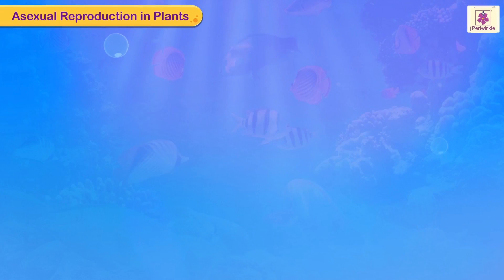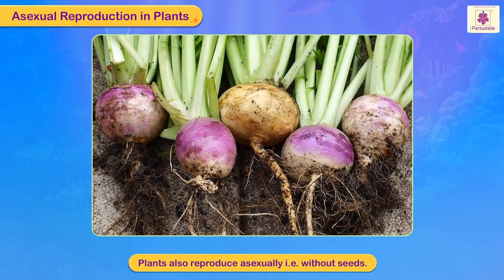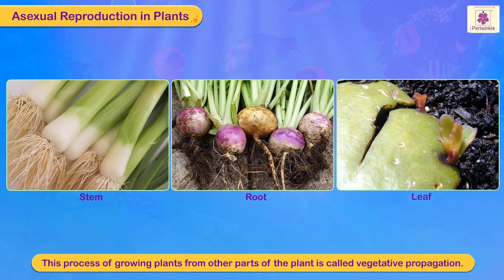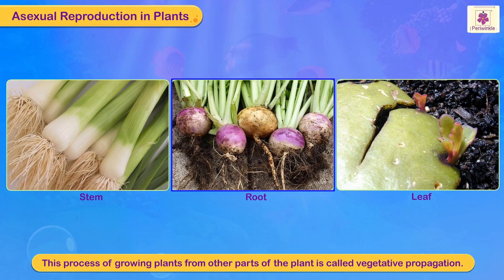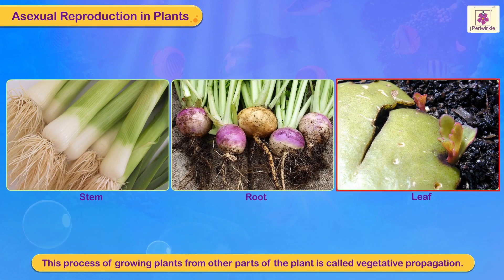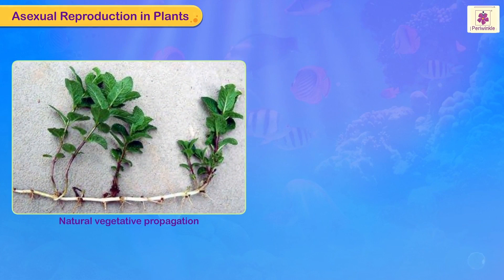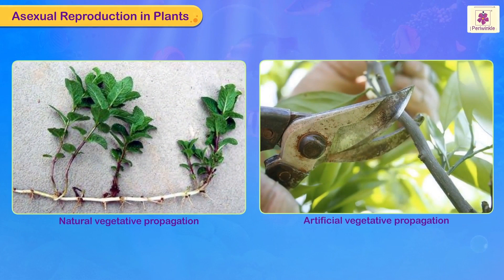Asexual reproduction in plants: plants also reproduce asexually, i.e. without seeds. This process of growing plants from other parts of the plant like stem, root, or leaves is called vegetative propagation. It occurs naturally or can be induced by man.